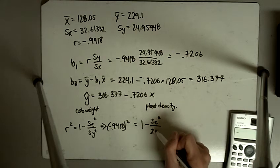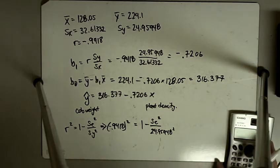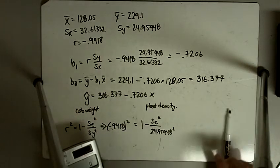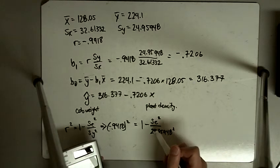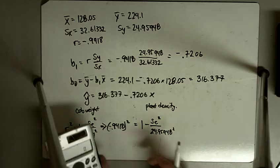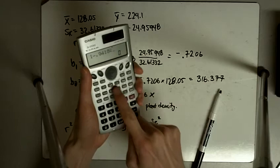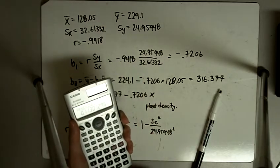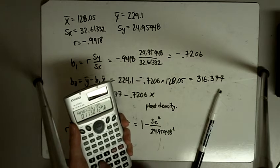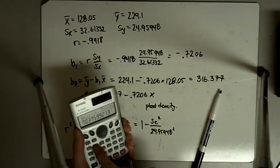Times our S of Y squared, 24.95448 squared. So solving for this, I would move the 1 over, and so I just do 1 minus 0.9418 squared, and I'm going to multiply that by 24.95448 squared, and I'm going to take the square root of that.